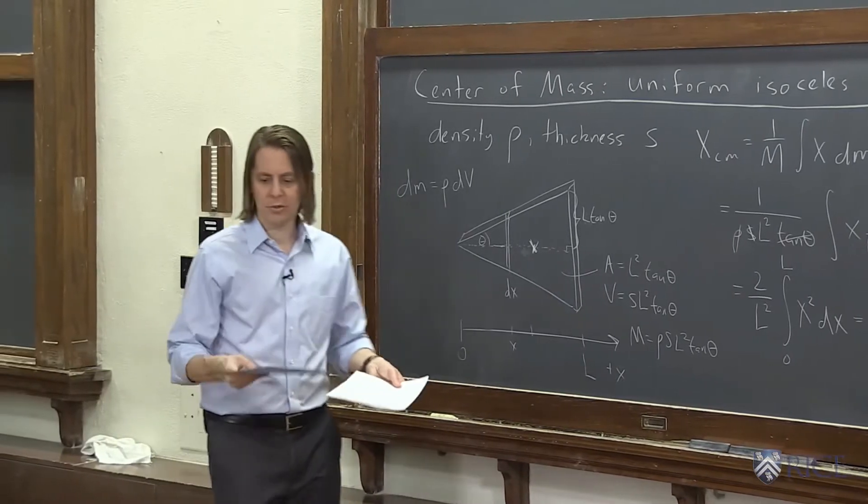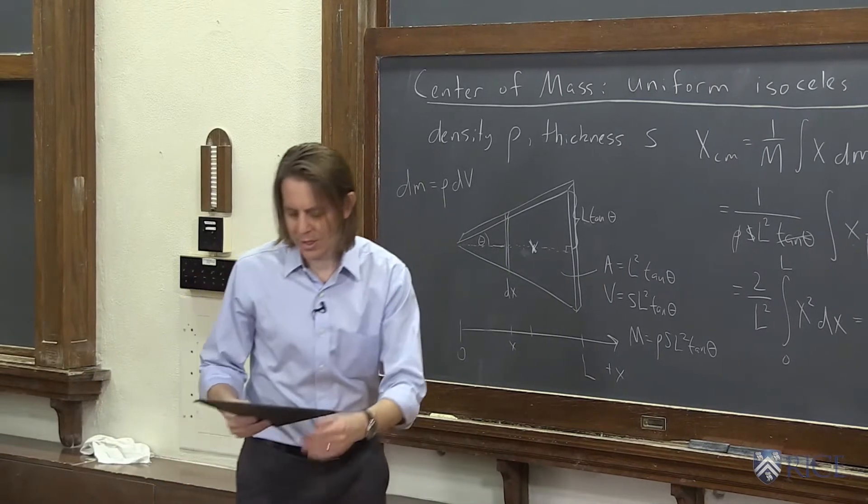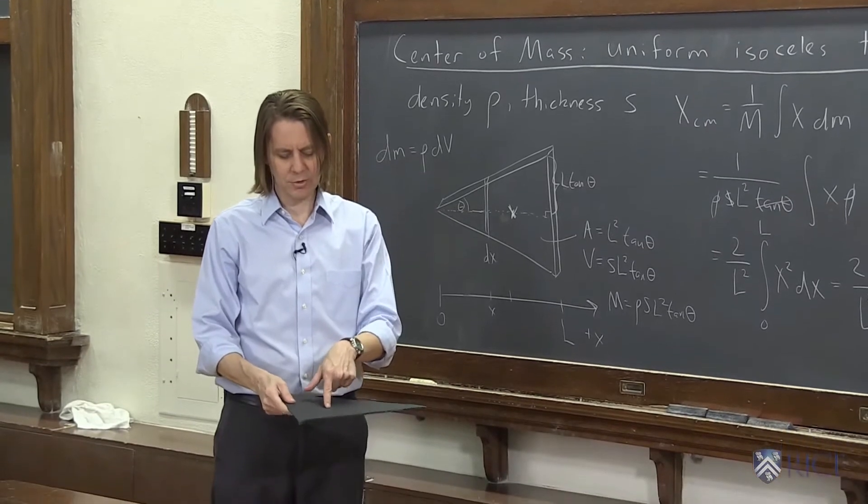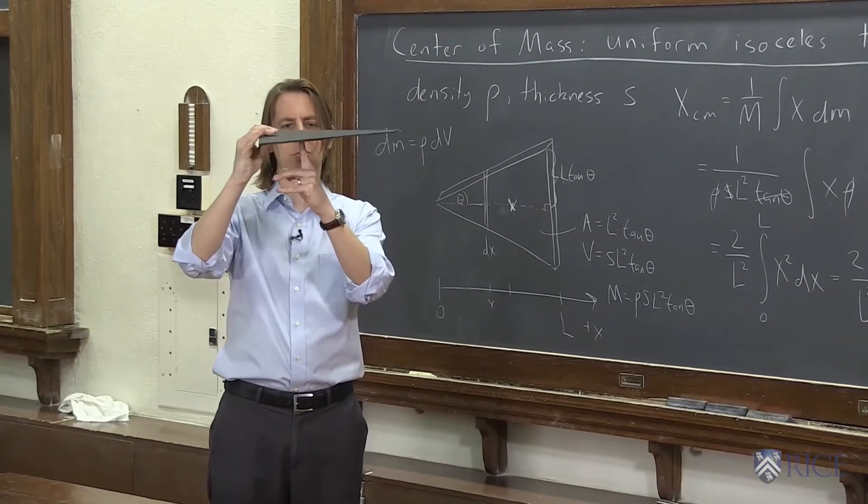So I can take my isosceles triangle, and I should find that the center of mass is around two-thirds L, and that should be about where it balances, kind of like the rod.